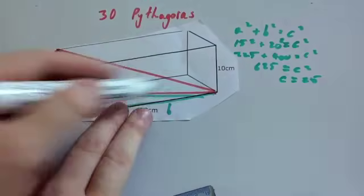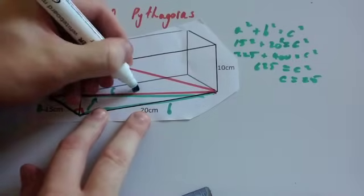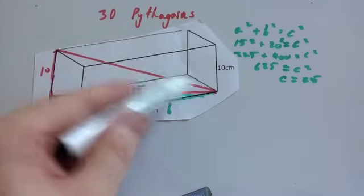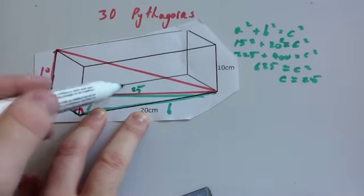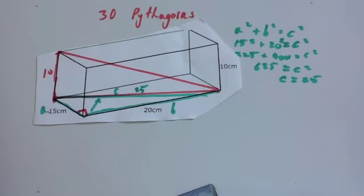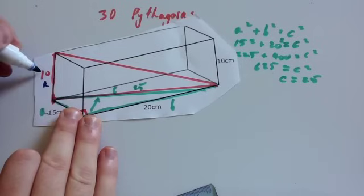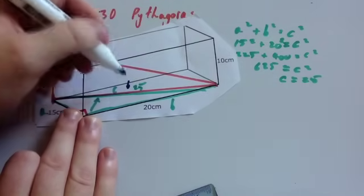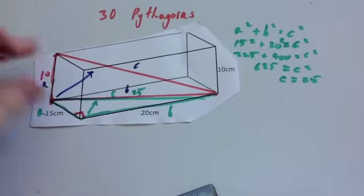On the base of the cuboid, the diagonal is 25 centimetres. That tells us for the red triangle — to find the diagonal through the shape — we've got the height of 10, the base of the triangle is 25, and we want to find the diagonal. For the red triangle: A, the smaller side, is 10; B, the other short side, is 25; and the longer side — C, opposite the right angle — is what we're looking for.